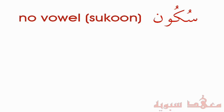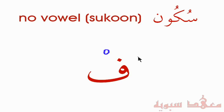In this lesson we're going to be talking about the lack of a vowel, which in Arabic is known as Sukun. Here we have the letter Fa. When we represent no vowel, we don't just leave the letter without any marks. Sukun is represented by either a small circle on top, or with this other mark here. You'll find both used.